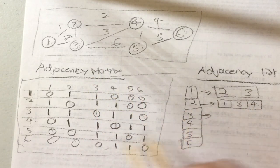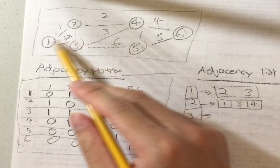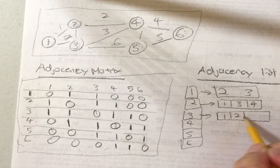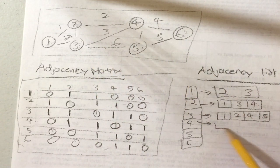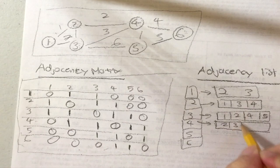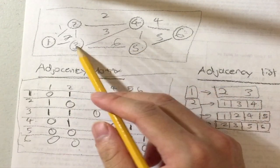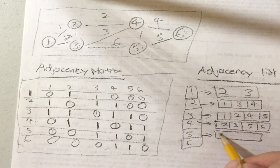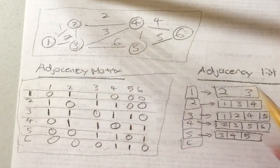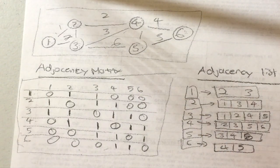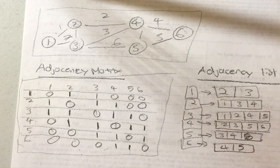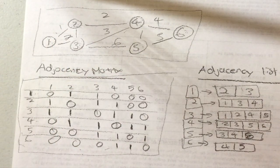Vertex three's neighbors are one, two, four, and five. Vertex four's neighbors are two, three, five, and six. Vertex five's neighbors are three, four, and six. And vertex six's neighbors are four and five. That's how you represent a graph as an adjacency list — for every vertex, you have a list of all its neighbors.